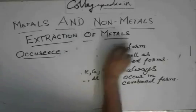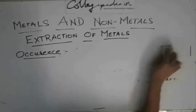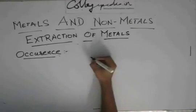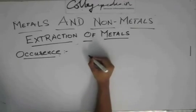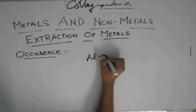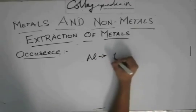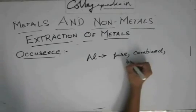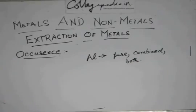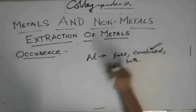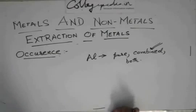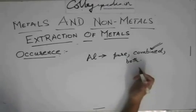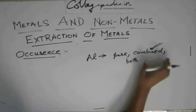So if you get a question — name a metal which occurs only in pure form — you can write gold or silver. Or if you get a question like: does aluminium occur in pure form, combined form, or both? The answer is combined, because aluminium is very reactive and towards the top of the reactivity series. So it cannot occur in pure or both forms — it occurs only in combined form.